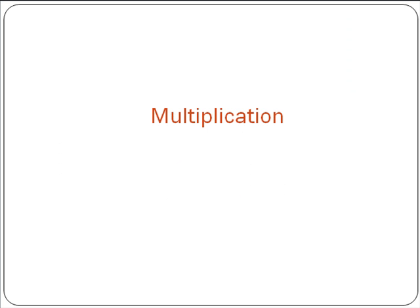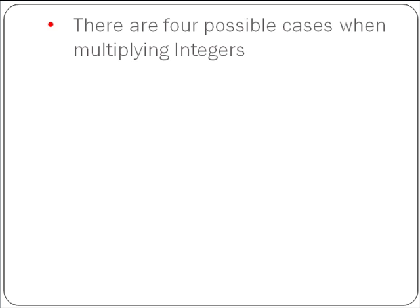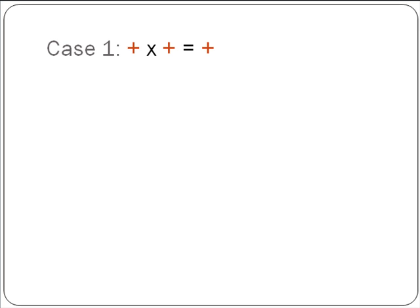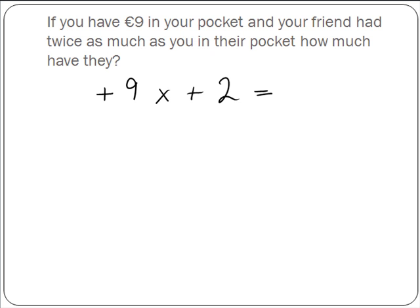Now we look at multiplication. There are four possible cases when multiplying integers. For the first case, if you have 9 euro in your pocket and your friend had twice as much as you in their pocket, how much have they? So here we have plus 9, and your friend has twice as much, so we're multiplying by plus 2. In this case we have a plus by a plus, which will give us a plus. So our answer is going to be a plus, and 9 by 2 is 18.